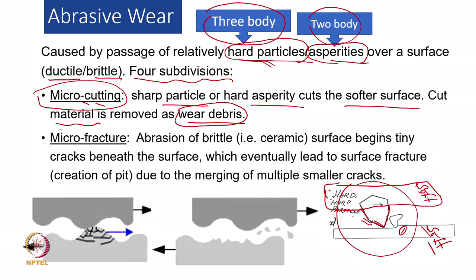Another mechanism in abrasive wear is micro fracture. Micro fracture means a fracture happening at the micro scale, and it is more dominant in brittle materials. If the brittle material is subjected to sliding and load, there will be micro cracks generated below the surface. Repeated sliding will cause these micro cracks to grow, connect with each other, and make a bigger crack that gets eliminated from the surface — but in a fragmented form, not as one complete lump as in adhesive wear.